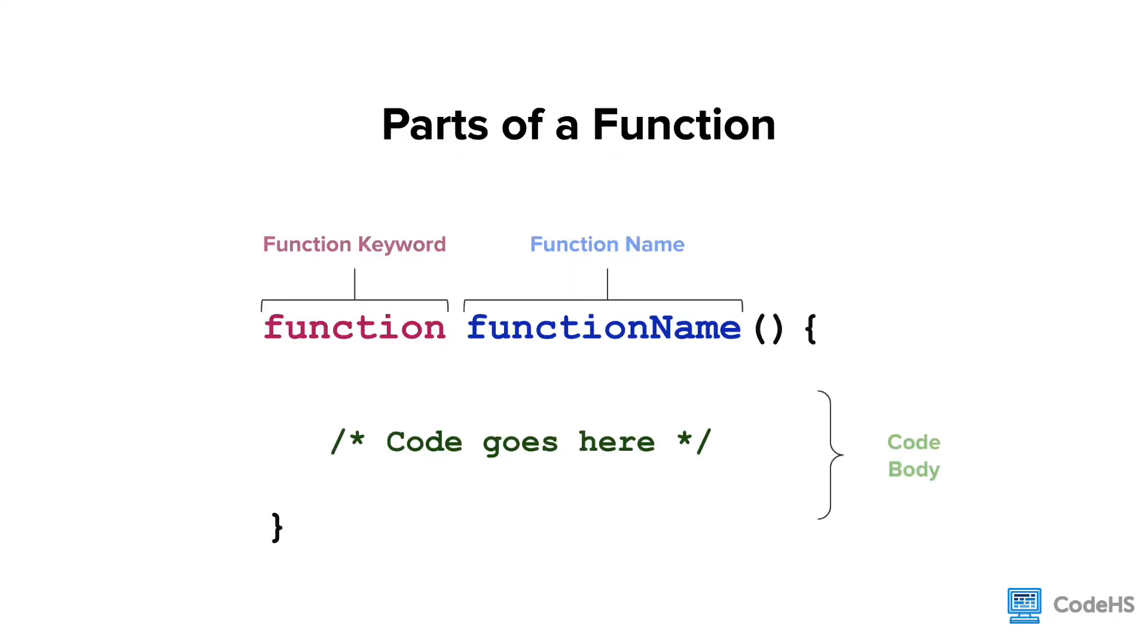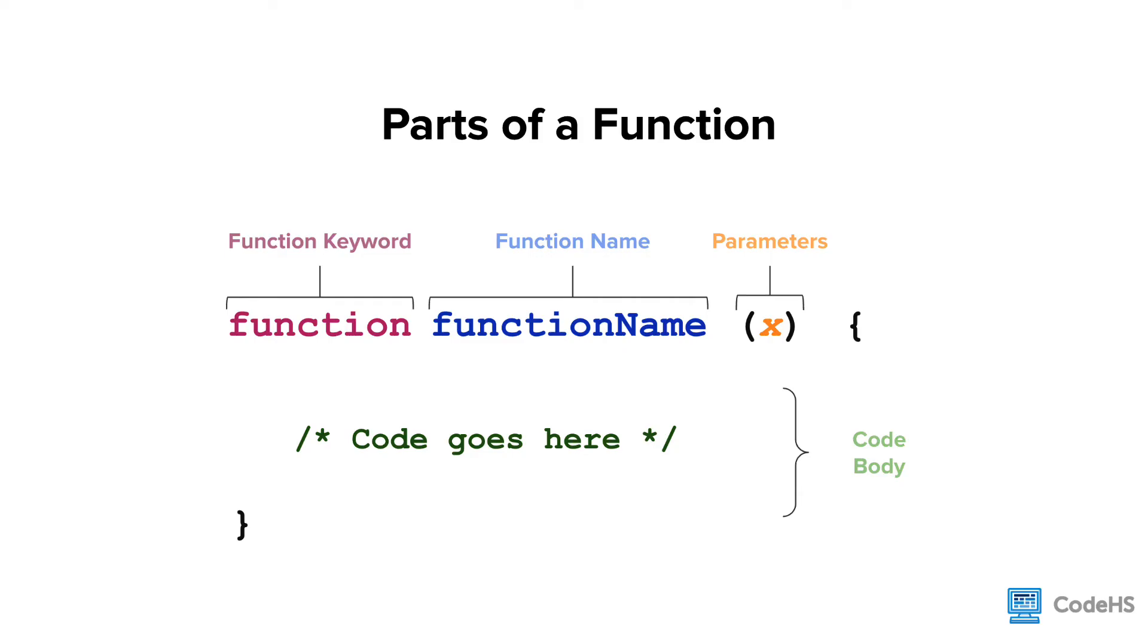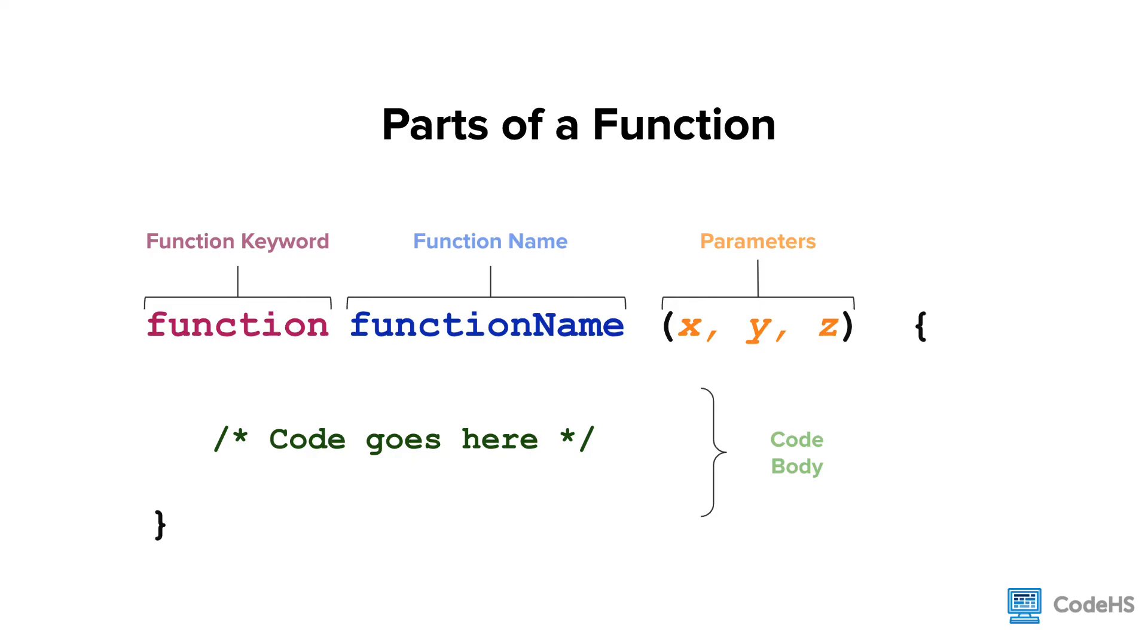Going back to the parts of a function, you might ask, where do parameters come in? When writing a function definition, the parameters go inside of the parentheses. You can have any number of parameters in a function definition, you just need to separate them with a comma.